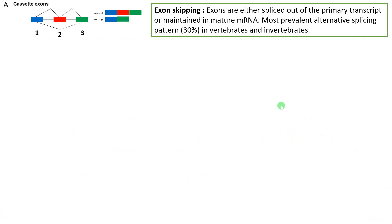There are seven types of alternative splicing. The first is called cassette exons, also called exon skipping. Here, exons are represented by colored boxes and introns by lines. An exon is either spliced out of the primary transcript or maintained in the mature RNA. In exon skipping, one of the exons is skipped — for example, exon 1 and exon 3 are joined while exon 2 is skipped. This is the most common type, occurring in nearly 30% of cases in both vertebrates and invertebrates.